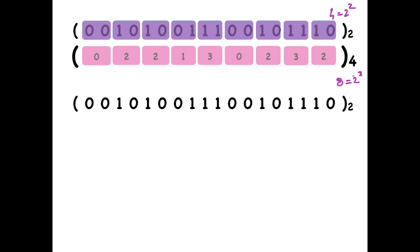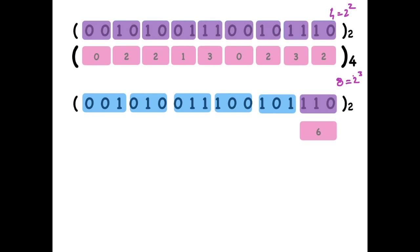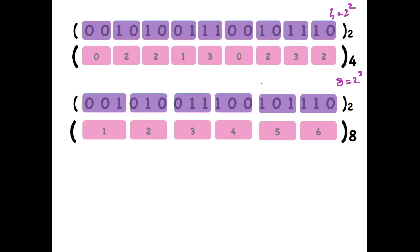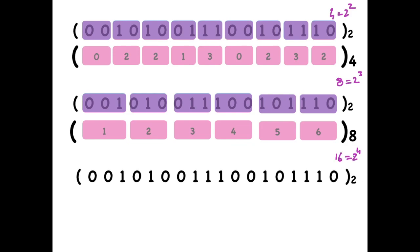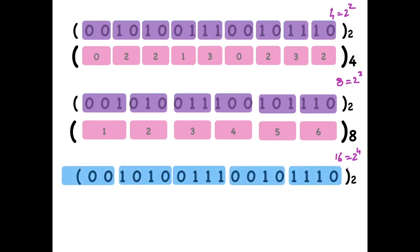Next, given the binary representation, to convert to base 8 we make groups of size 3 and convert each group to decimal — this matches the number originally given in the question. To convert to base 16, which is 2 to the power 4, we make groups of size 4. The last group may not be complete, so we write leading zeros, as leading zeros do not change the number. Then we convert each group to its decimal equivalent.